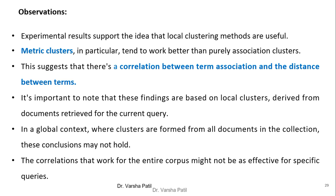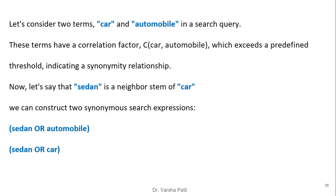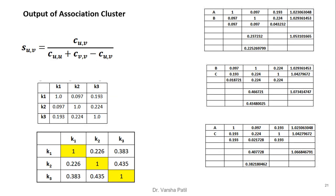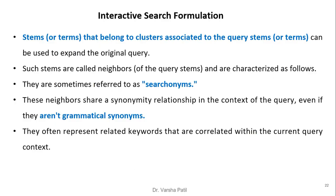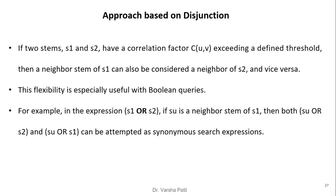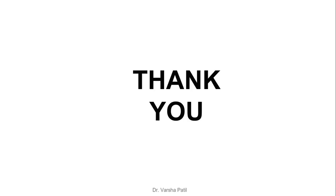Observations for local clustering: experimental results support the idea that local clustering methods are useful. Metric cluster in particular tends to work better than purely association-based cluster, suggesting a correlation between term association and the distance between terms. It is important to note that these findings are based on local clusters derived from documents for the current query, where only a few documents are selected for analysis. In a global context, where clusters are formed from all documents in the collection, this conclusion may not hold — correlations effective for an entire corpus might not be effective for specific queries. This concludes query expansion through local clustering.